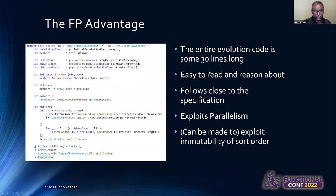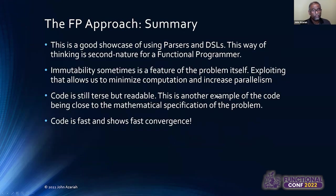So as I mentioned, this is again another example where the code that is actually written follows very closely with the specification written in the paper. The entire evolution of the code is 30 lines long, and it exploits parallelism that comes inherently with the problem. So as I said, the summary for this problem is that this is a showcase of using parsers, DSLs, and making that a part of your toolkit, and then using immutability as part of the solution when it offers itself as part of the problem, and try to keep the code as close and readable.